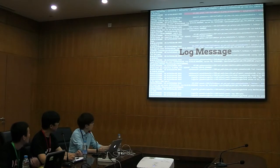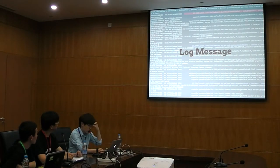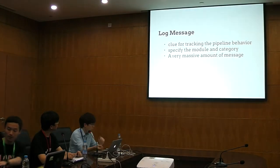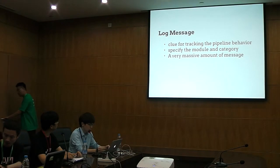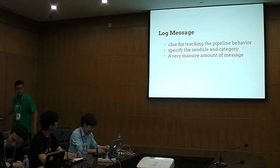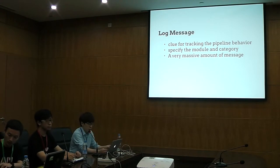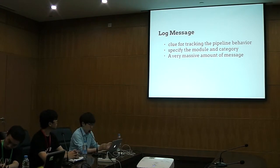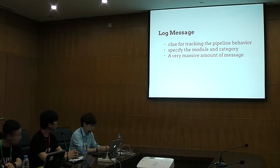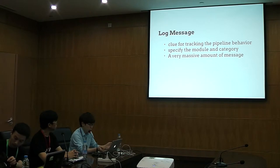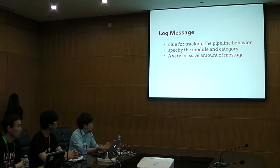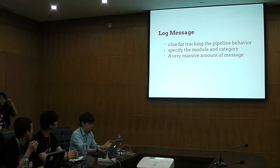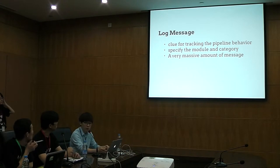The first one is log messages — it's the first approach I use when I start to debug. Log messages are a clue for tracking the pipeline behavior. You can specify which module or category you want to see. If you don't know which module or category to filter, you may get hundreds of thousands of log messages, making it very hard to find what the problem is.